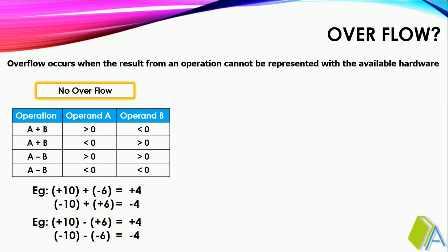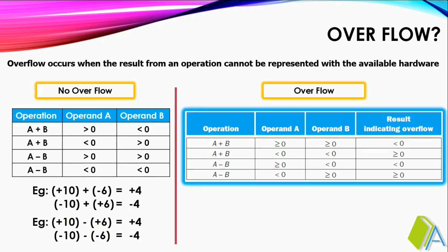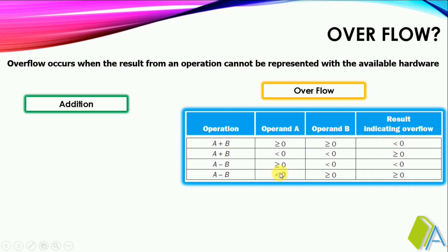Now, what are the conditions for overflow? Overflow can occur in addition as well as subtraction. In addition we have two different cases. When we add two positive numbers, if the result is negative, that is an indication of overflow. When we add two negative numbers, if the result is positive, that is also an indication of overflow.